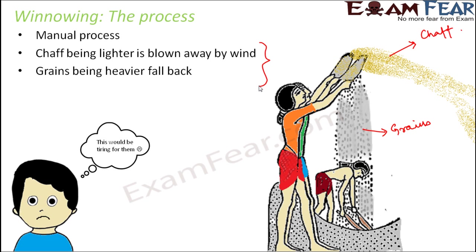If you want to reduce the human labor involved, this process can be substituted with a combined harvester machine. The combined harvester is a multi-functional automated machine — it does harvesting, threshing, separates grains from the stocks, and also separates grain seeds from the chaff. All these things can be done within that single machine.